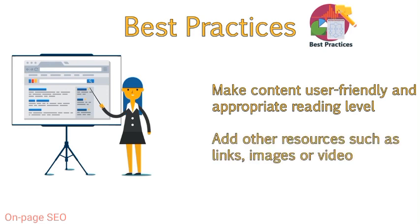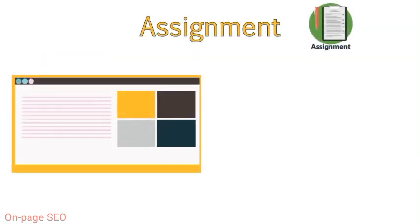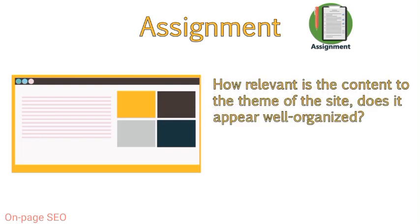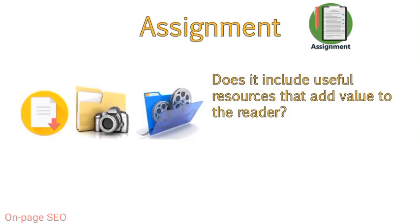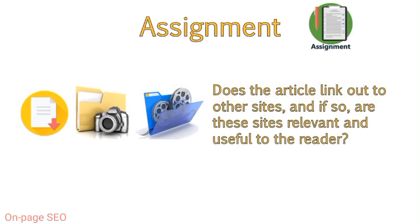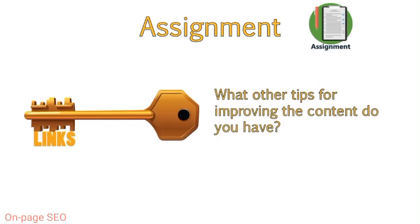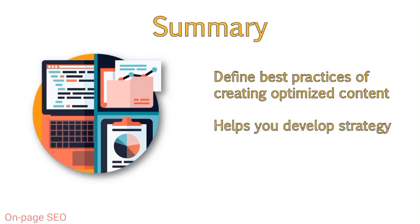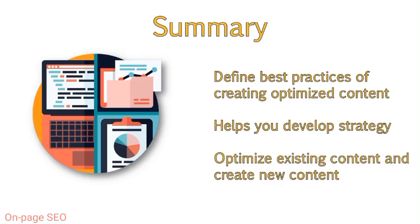Instead of only using an exact keyword, try to use synonyms. Try to match the reading level to that of your audience — this will aid in user-friendliness, which will help your SEO. Link to other related web pages or articles within your content. Add images and other resources where applicable. For your next assignment, find an article on the subject of your choice and rate the content based on the best practices we discussed, answering: How relevant is the content to the theme of the site? Does it include useful resources that add value to the reader? Does the article link out to other sites? Does the article appear to use keywords effectively? What other tips for improving the content do you have? You should now be able to define best practices of creating optimized content, aiding you in developing a content creation strategy, optimizing existing content, and creating new content.